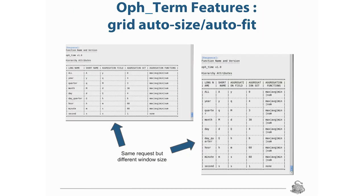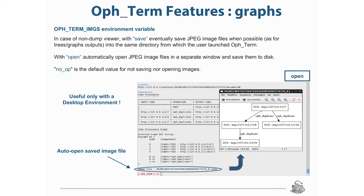We also implemented an auto-fit of the output, so the output is more stretched and readable. You can use the variable OPH_TERM_IMAGES with some values in order to visualize the output using an image. For example, save to save an image on your local hard disk; open to automatically open JPEG image files in a separate window and save them to disk; and nope, which is the default, for not saving or opening images.